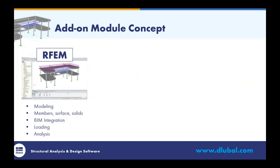RFEM is the main finite element analysis program, which allows us to fully model our structure. Within the program we have all cross sections and materials from various standards including AISC, CSA, and many other international standards. We can model members, surfaces, and solids. We also have BIM integration with AutoCAD, Tekla, Revit, STP files, STEP files, IFC, and many other file types. We set up loading and load combinations per various standards, and can run a full analysis to get deflections, support reactions, and internal forces.